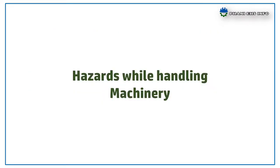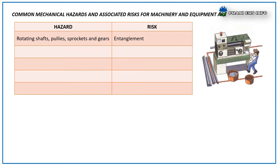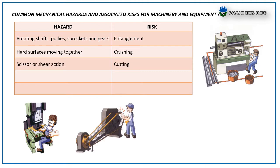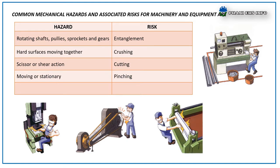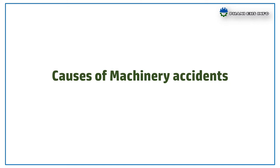The misuse of machinery would create potential safety hazards that may cause accidents, injuries, or even death. The common mechanical hazards associated with machinery and equipment are: rotating shafts, pulleys, sprockets and gates which may result in entanglement; hard surfaces moving together which results in crushing; scissors or shear actions which results in cutting; moving or stationary objects which results in pinching; and dust or waste which results in inhalation of tiny particles.